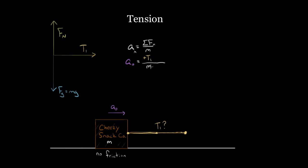Dividing by the mass and doing a little algebra, T1 equals mass times acceleration a₀. Also — don't draw acceleration as a force. People try to do this sometimes, but acceleration is not a force; acceleration is caused by a force. This is probably the easiest tension problem you could come up with, so let's step it up.